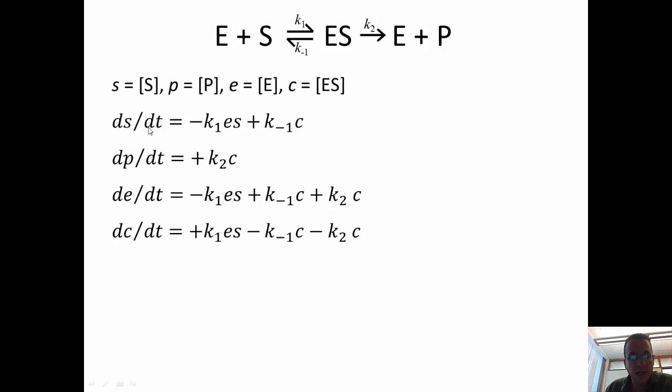So, ds/dt, the rate of change of S is given by the rate of disappearance of S. S disappears through this process, plus the rate of appearance of S. So, S appears through this process. So, the disappearance process has a negative sign in front of it.